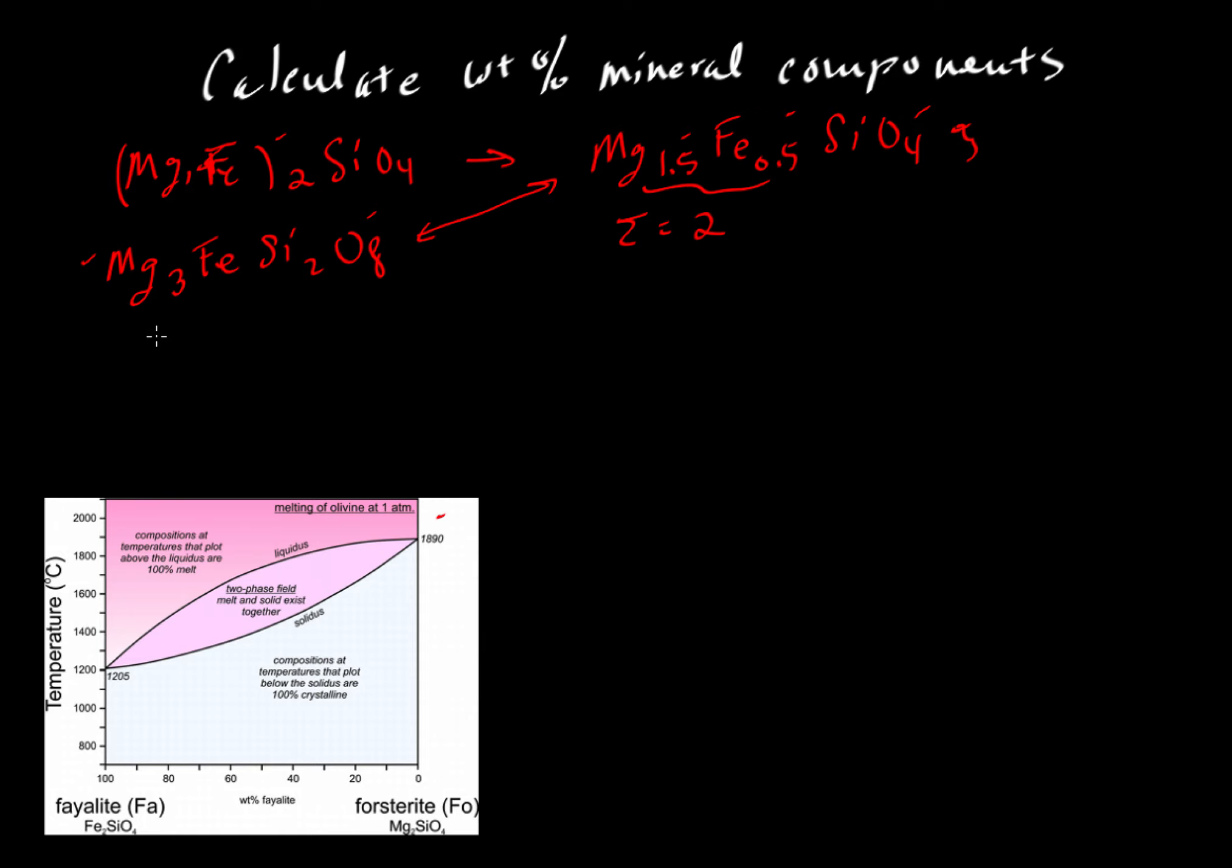What is the fraction of magnesium? The fraction of magnesium equals 1.5 out of 2, which equals 0.75. So magnesium atoms are 75% of this particular mineral. If we look at the fraction of iron, we'll take 0.5 over a total of 2 cations in this octahedral position.